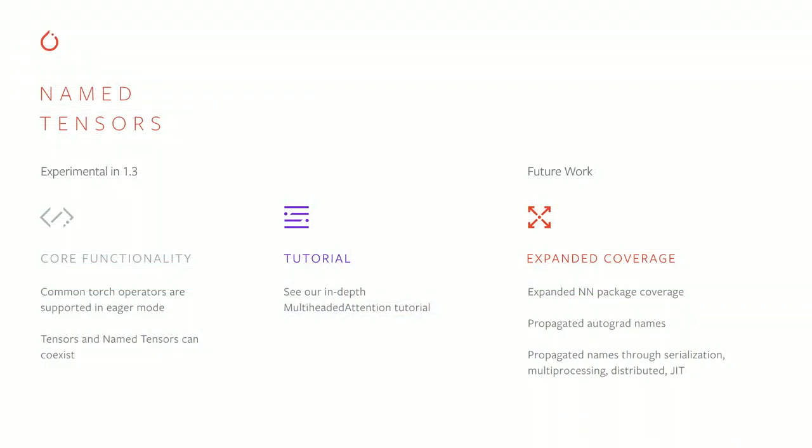Named tensors is considered experimental in version 1.3, but we'd love for you to try it out and give us feedback. The core functionality is in eager mode, meaning top-level Torch operations are supported with name propagation rules. You can also mix named and unnamed tensors, which lets you add named tensors incrementally to your program. There's a more in-depth tutorial online about supporting named tensors in multi-headed attention. In the future, we'll be expanding coverage to more of PyTorch — most of the NN package will be supported, we will propagate autograd names, and we'll do similar things for serialization, multiprocessing, distributed, and JIT.